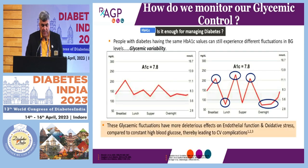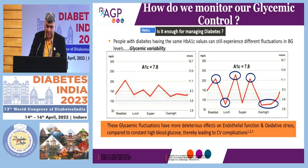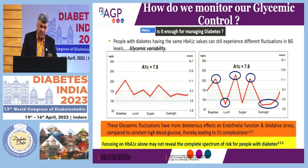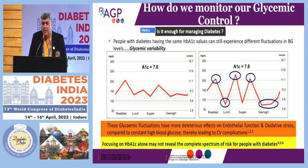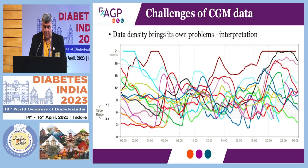The reason we do this is, as we understand today, that A1Cs may be similar but the variability may be different. It's important to see the larger picture, and hence the need to move beyond just SMBG and HbA1c.